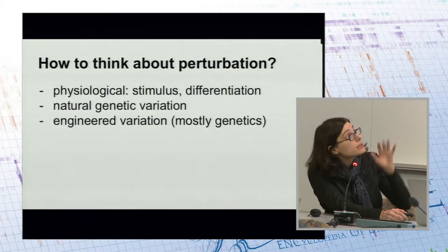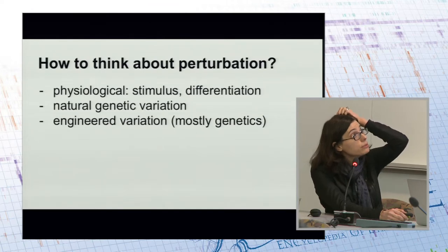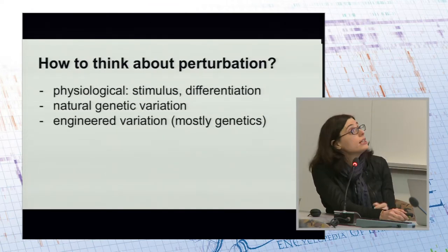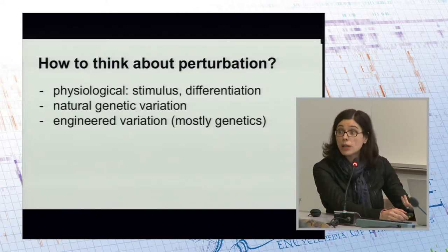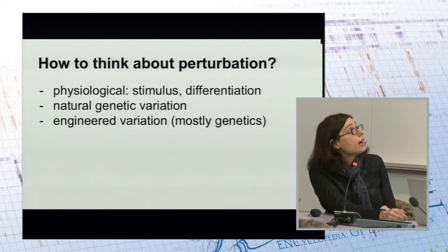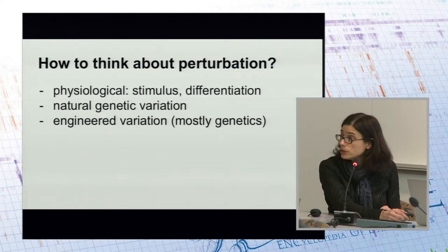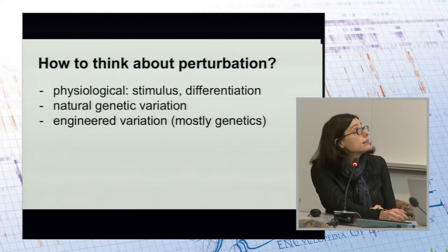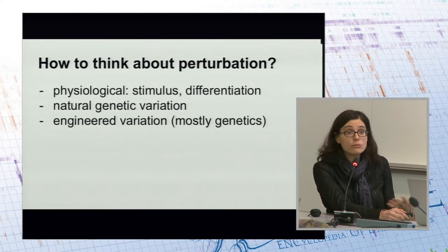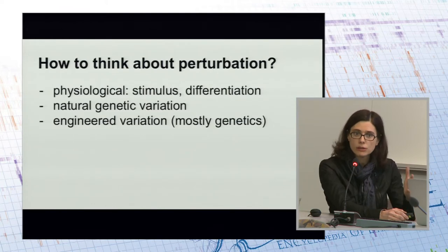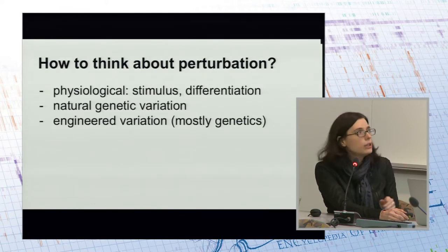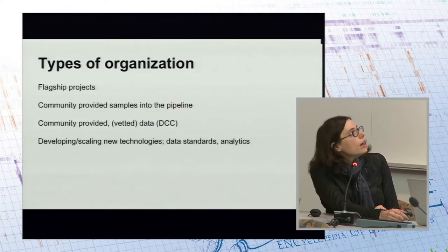Specifically on perturbation, people raised the issue of physiological conditions, using more stimuli, more differentiation, and specifically more time courses. People repeatedly alluded to natural genetic variation increasing our power to detect important mechanisms, and to engineered variation mostly through genetics — although at least one person referred to degrons, so it's not always going into the genome.